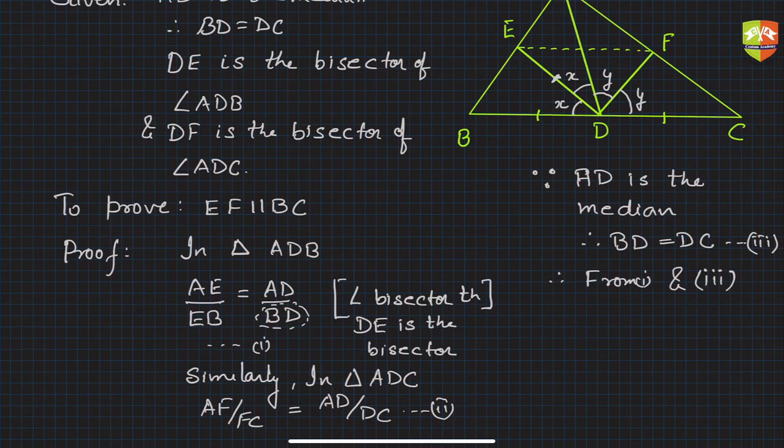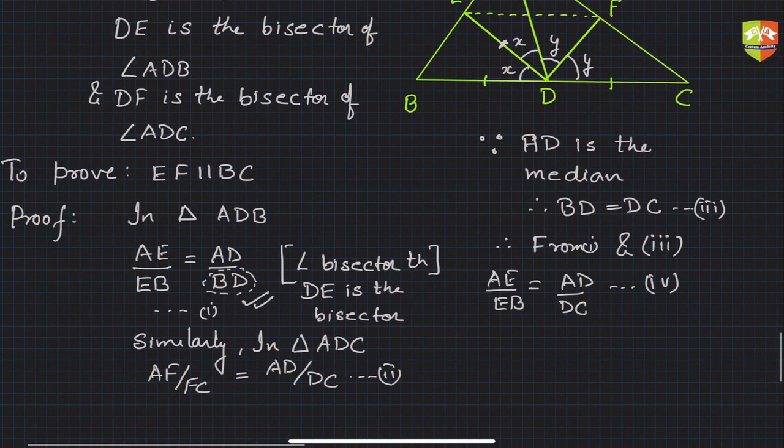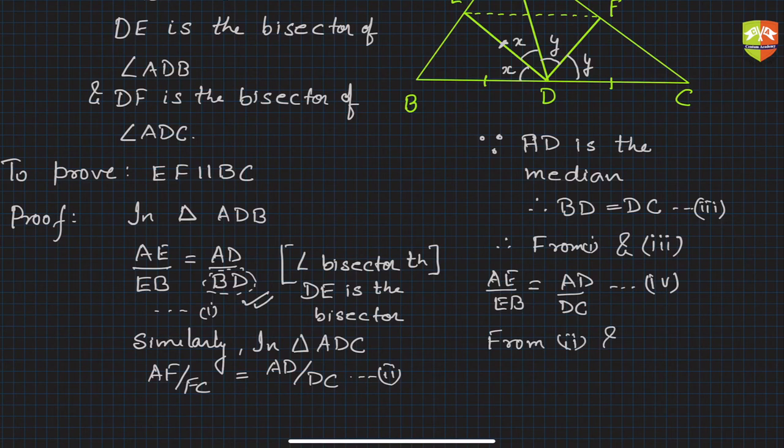Hence we will get AE/EB is equal to AD/DC. Instead of BD, I can write DC. This is equation four. Now if you notice equations two and four, the right-hand side of both are the same, so hence we can say AF/FC is equal to AE/EB.